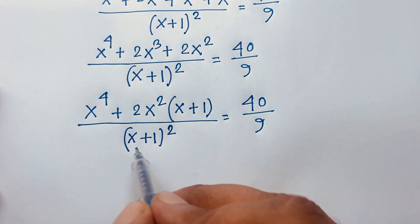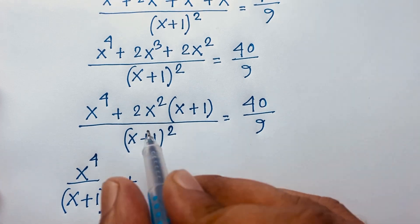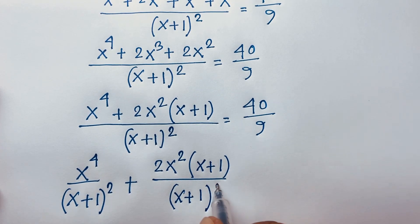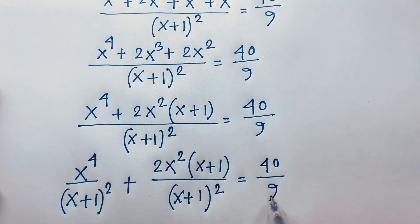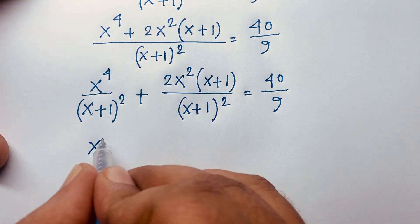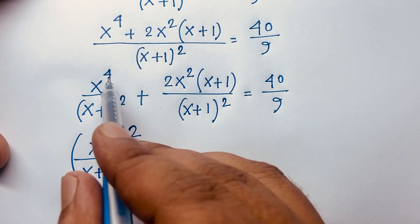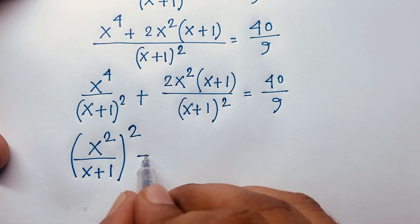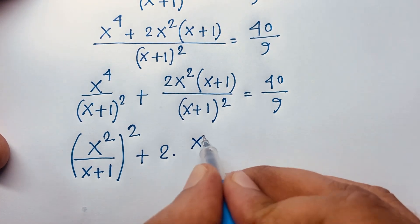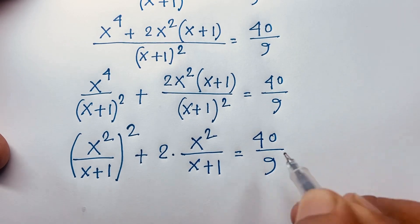Now I separate this fraction. The expression becomes x⁴ over (x+1)² plus 2x²(x+1) over (x+1)² equals 40 over 9. Then x⁴ = (x²)², so we get [x²/(x+1)]² plus 2 times x²/(x+1), since the (x+1) terms cancel, equals 40 over 9.